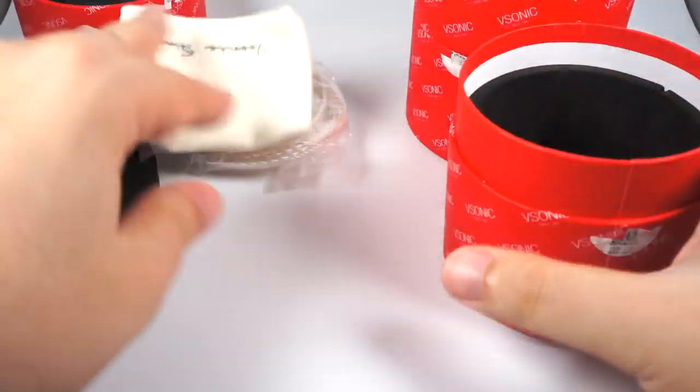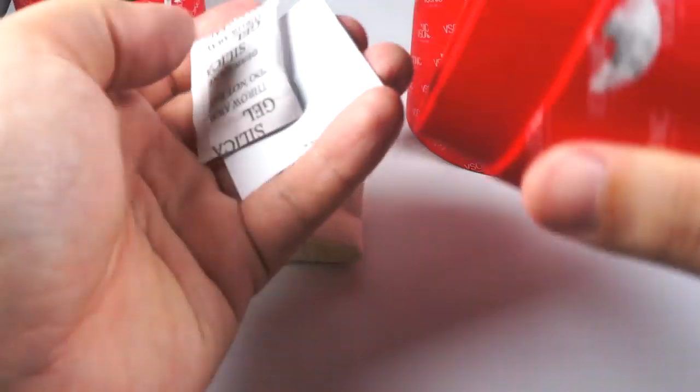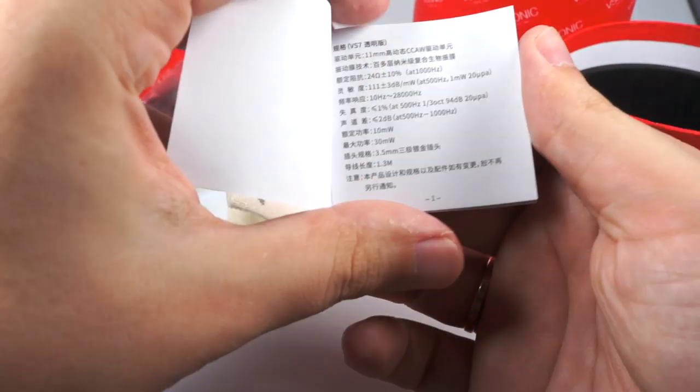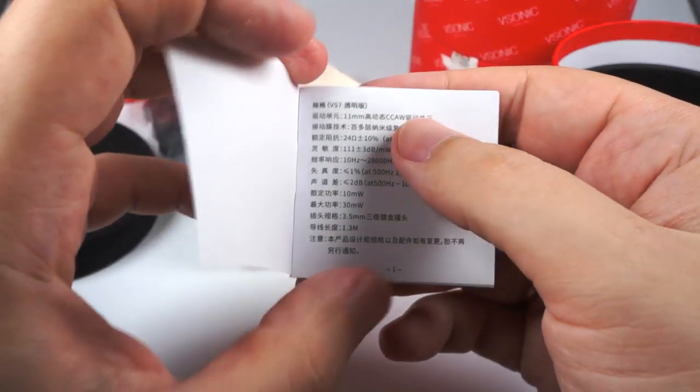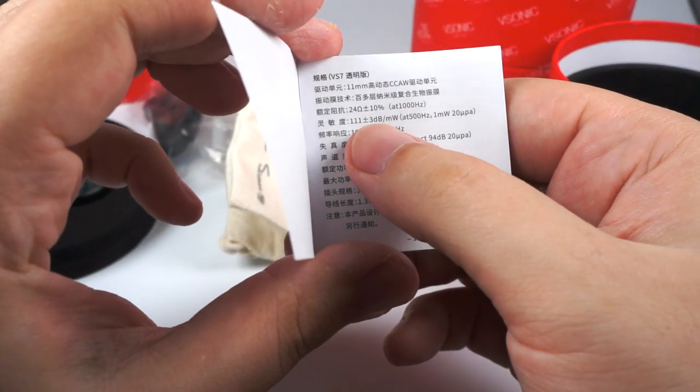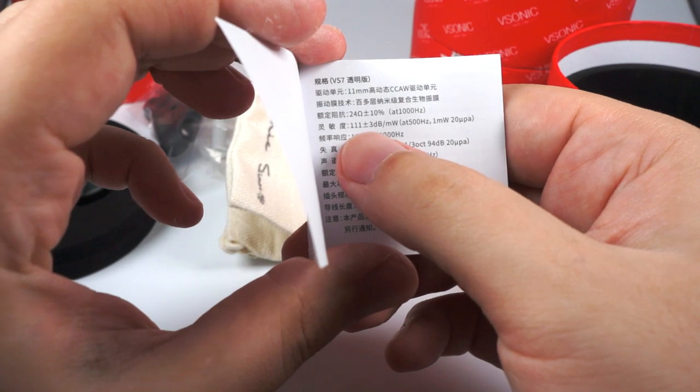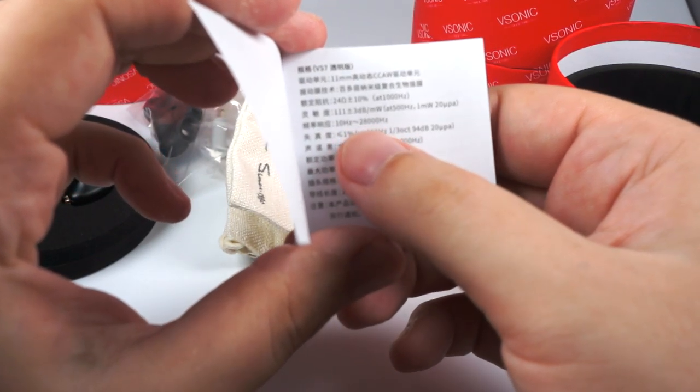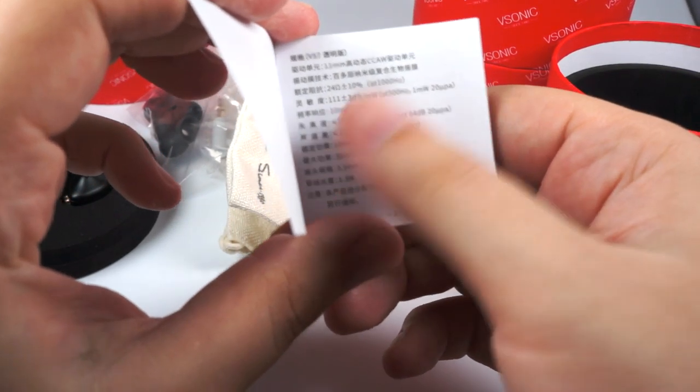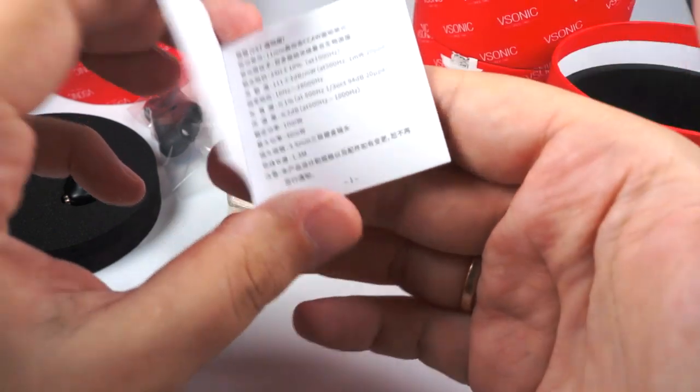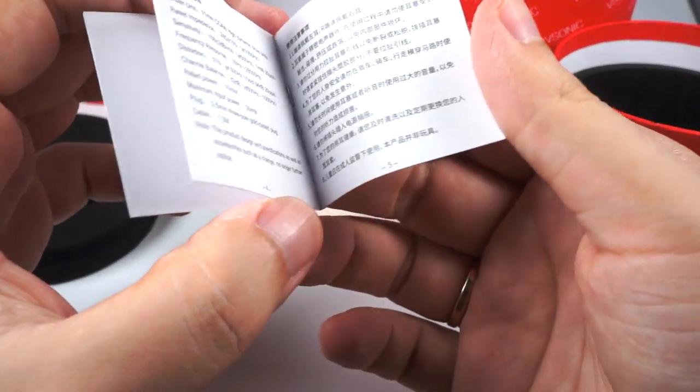Inside you get the earphones, stock cable, additional set of tips—one, two, three, four, five pairs—carrying pouch, and small manual warranty card. It's an 11 millimeter dynamic driver, 24 ohms of impedance and 111 decibels of sensitivity with wide frequency response.